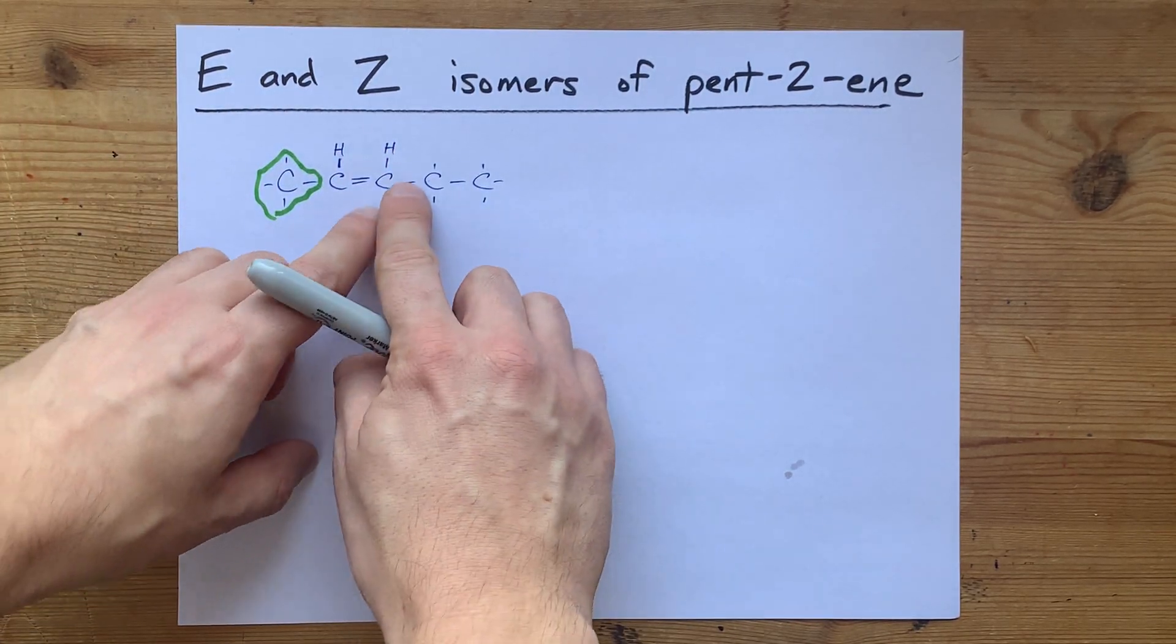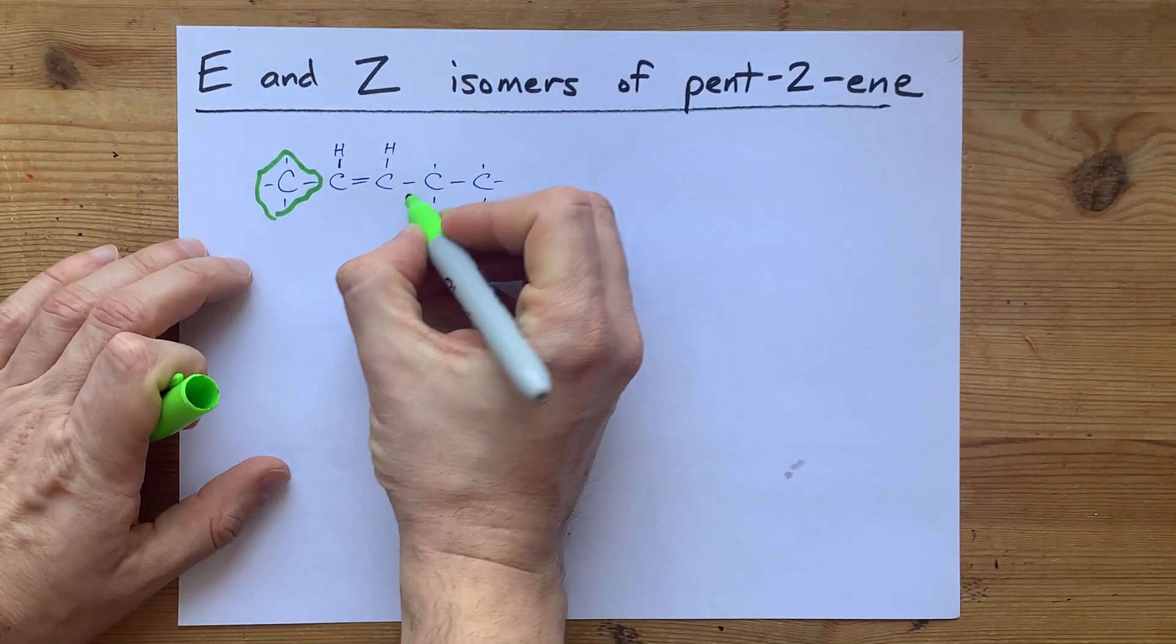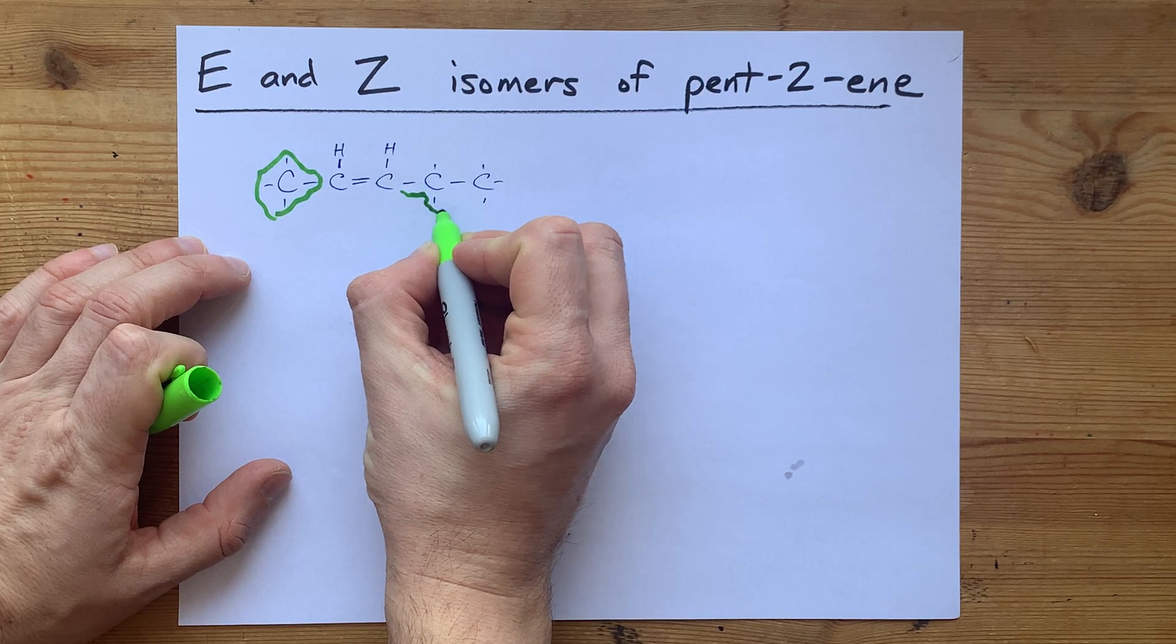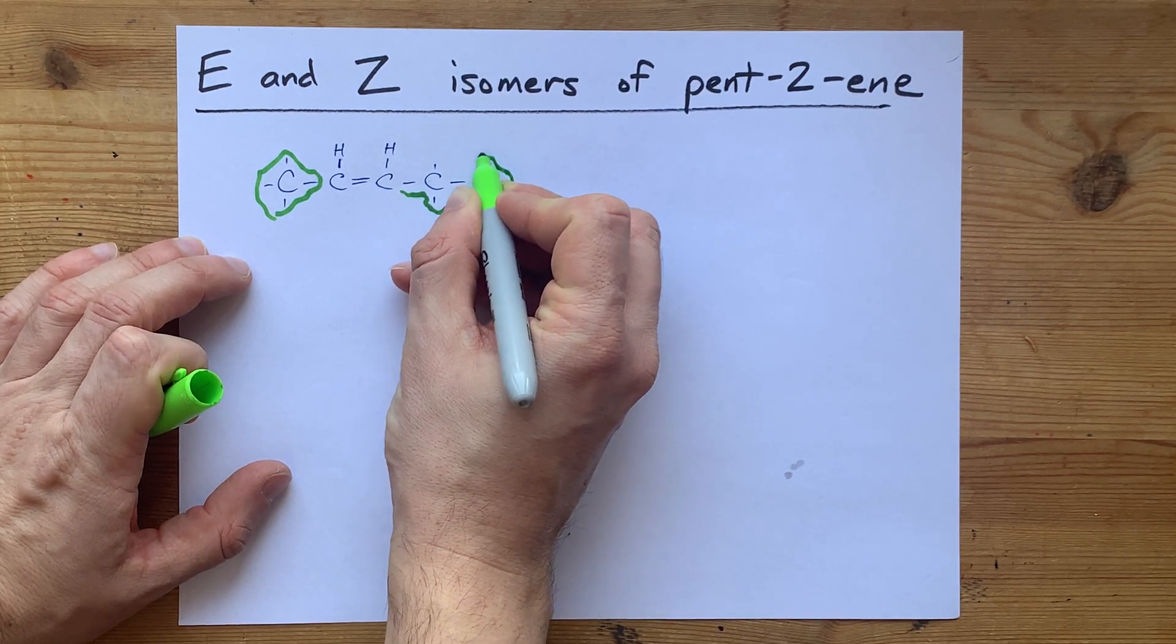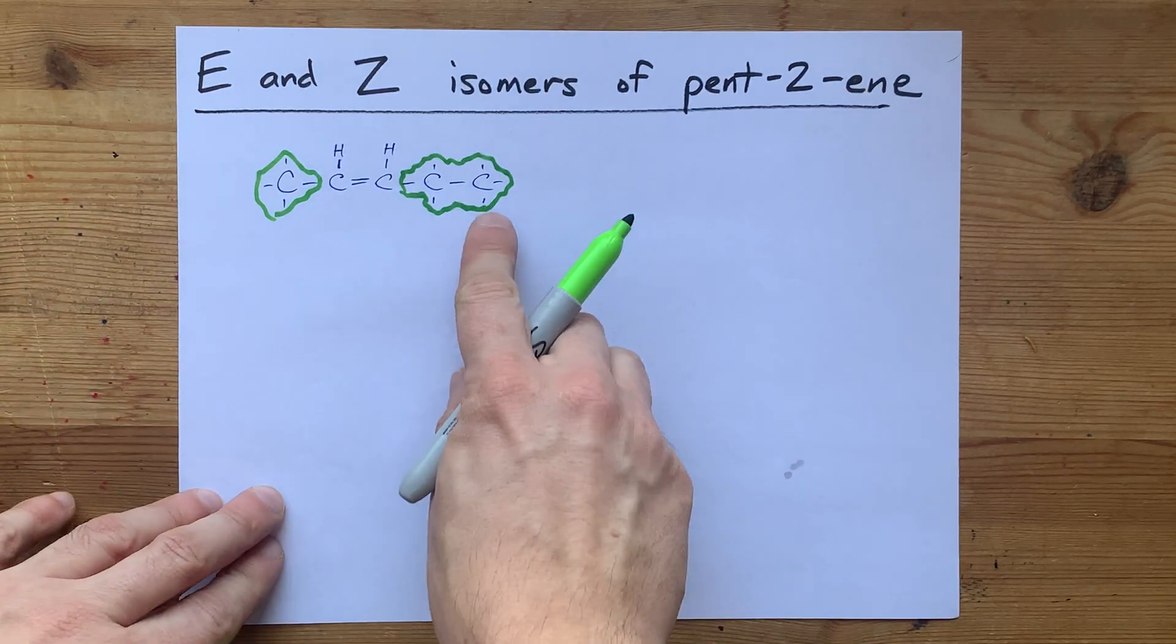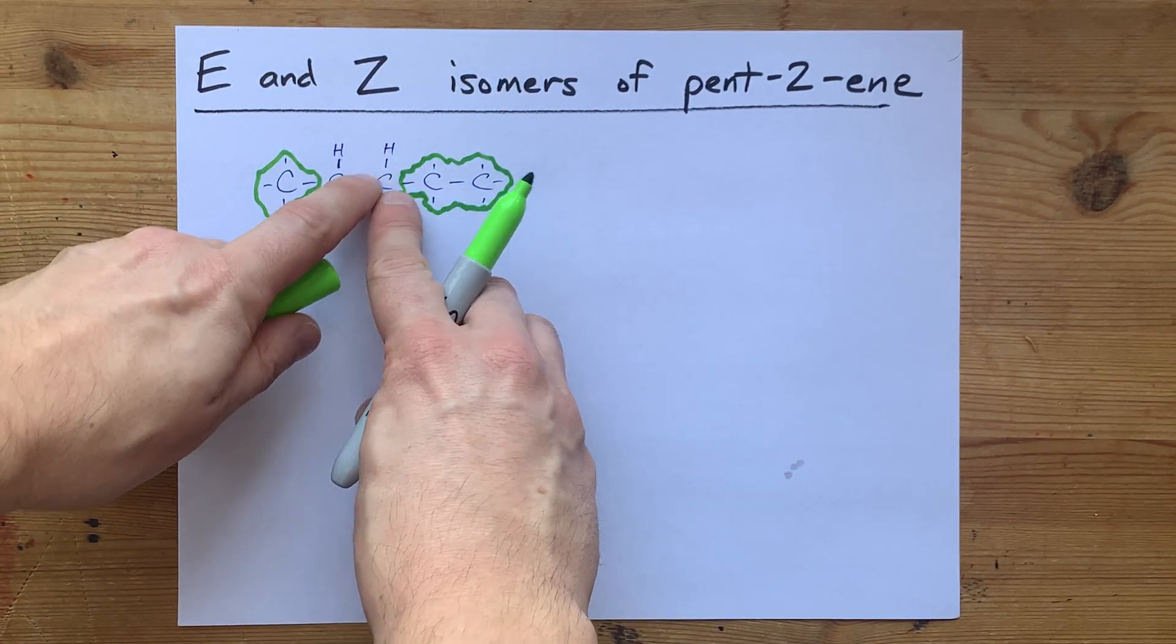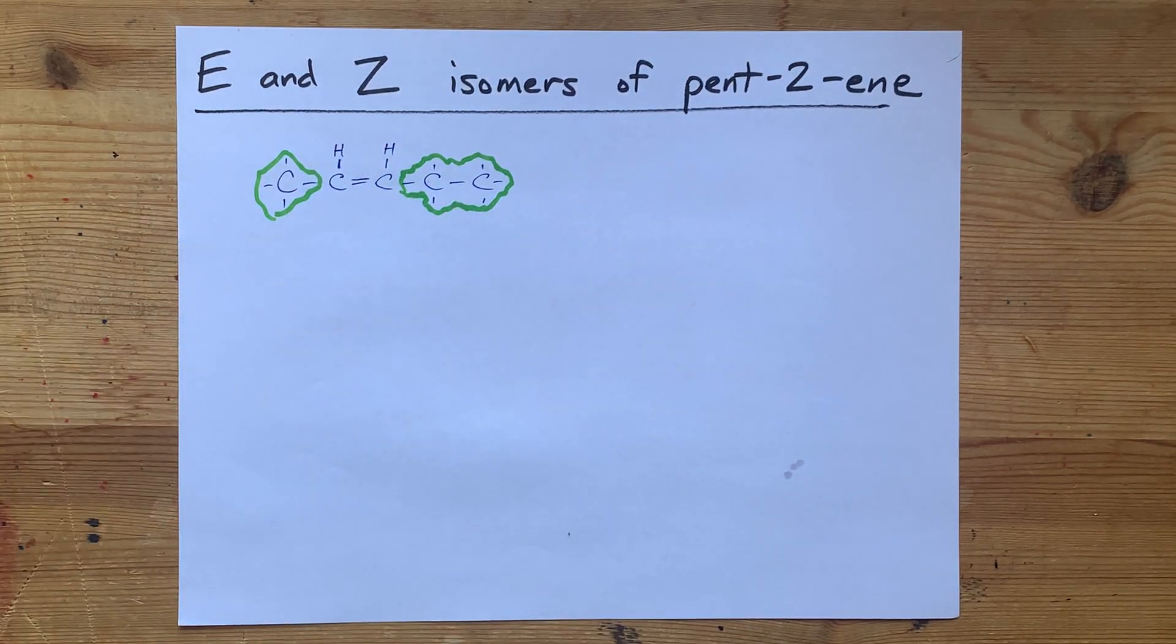If I go to the other carbon, I have a C versus an H again. The C has the higher priority because it has a higher atomic mass than hydrogen. And you're going atom by atom. I don't care what's connected to this carbon. We found a difference at the very first atom on either side of the branch.